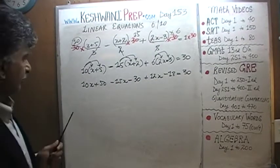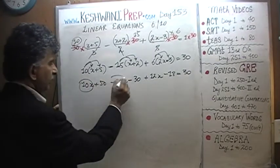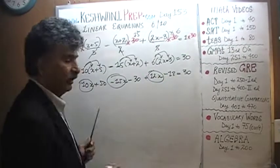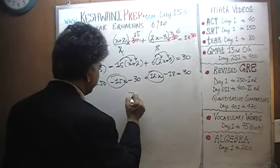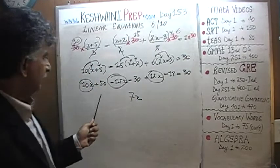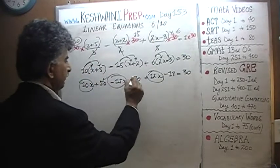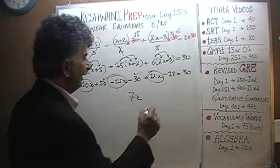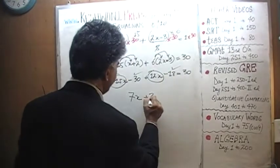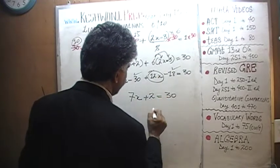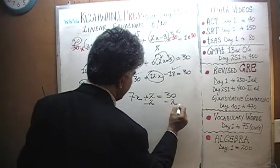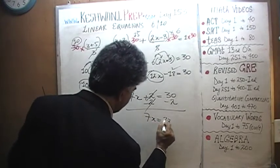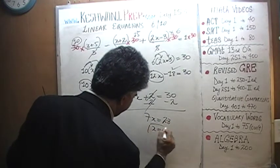Now we collect our like terms. 10x minus 15x is negative 5x, and negative 5x plus 12x is 7x. 50 minus 30 is 20, and 20 minus 18 is 2. So we have 7x plus 2 equals 30. Subtract 2 from both sides — 7x equals 28, which means x equals 4.